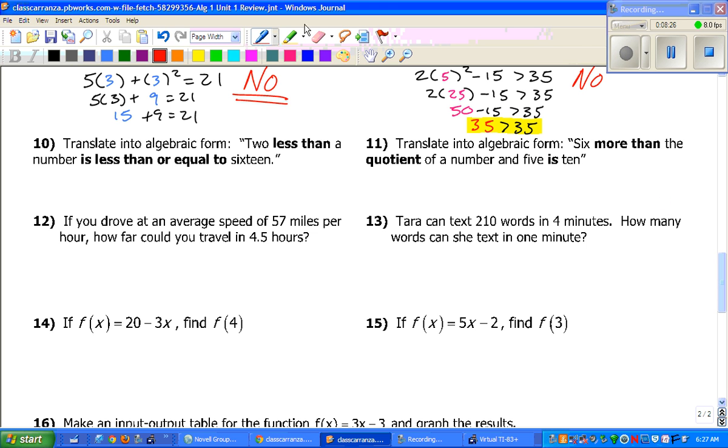Translate into algebraic form. It says, 2 less than a number is less than or equal to 16. Less than, we have to make sure to switch. So, my 2 goes to the back. It's less than or equal to 16. And a number is x.